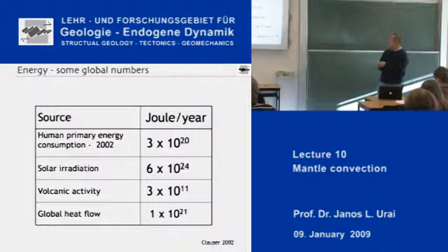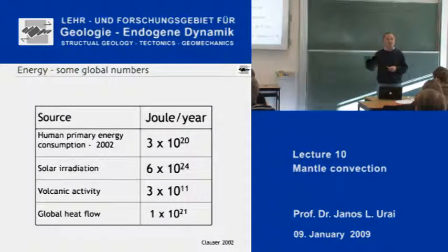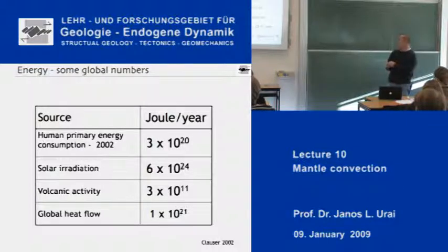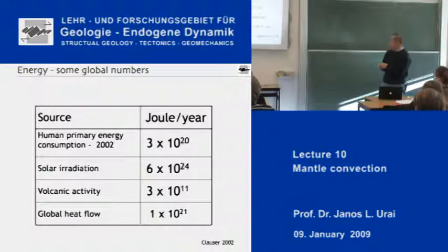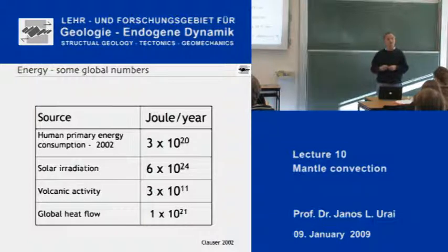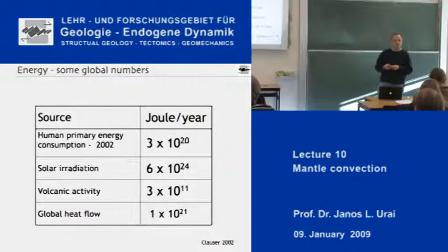The temperature gradient close to the Earth's surface is about 30 degrees centigrade per kilometer — if you go into a deep mine, it is quite warm down there. In the Aachen area it is typically about 30 degrees Celsius per kilometer. If you put that into the equation, along with the thermal conductivity of rocks — which is about 1 to 7 joules per second meter Kelvin — you get the amount of heat flow coming out of the Earth, which is in the milliwatts per square meter range.